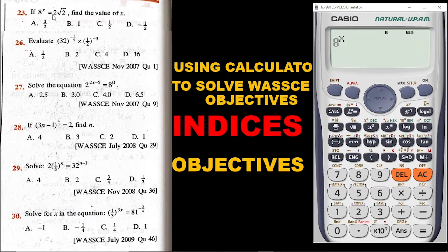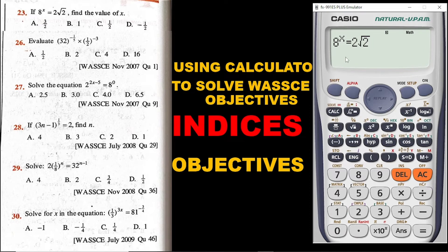This equal sign that you see is just under the shift. To access it, you press alpha and then you click on it. Then we have 2 root 2. So the root 2 comes in.